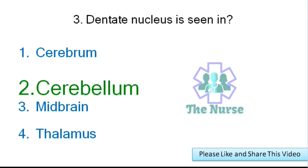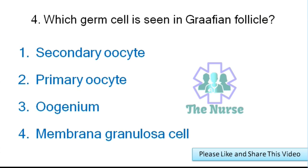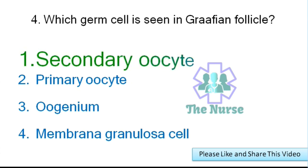Next question: Which germ cell is seen in the Graafian follicle? Options: secondary oocyte, primary oocyte, oogonium, or membrana granulosa cell. Correct answer: secondary oocyte.